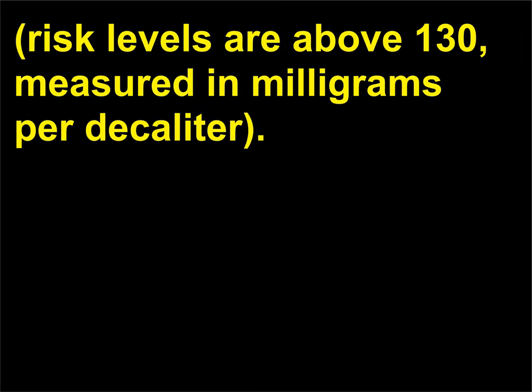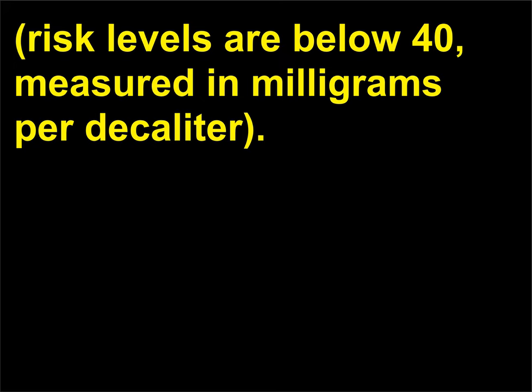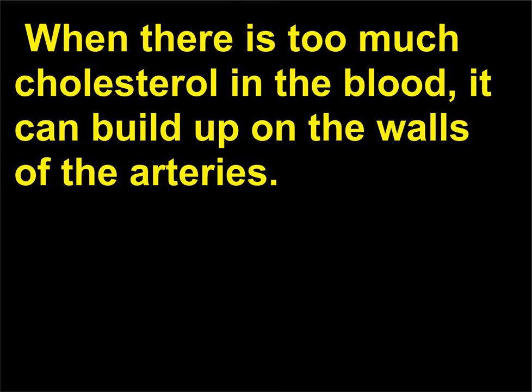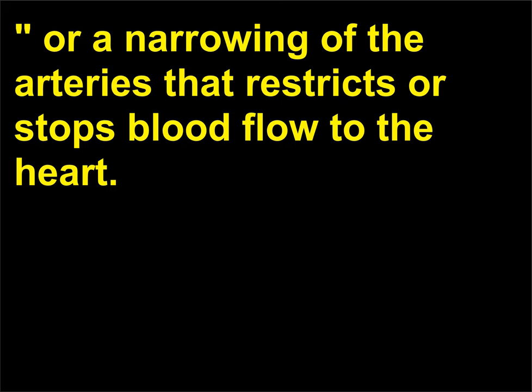LDL is the main source of the buildup and blockage in the arteries. Risk levels are above 130, measured in milligrams per deciliter. There is also high-density lipoprotein, HDL, the good cholesterol that helps keep the plaque from building up. Risk levels are below 40, measured in milligrams per deciliter. When there is too much cholesterol in the blood, it can build up on the walls of the arteries. Over time, the buildup, often called plaque, causes hardening of the arteries, or a narrowing of the arteries that restricts or stops blood flow to the heart.